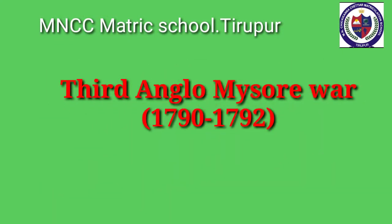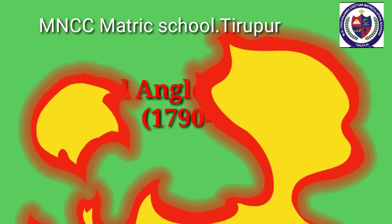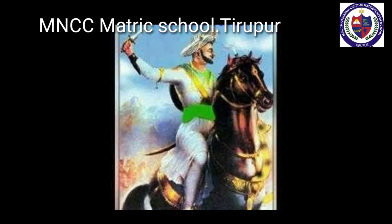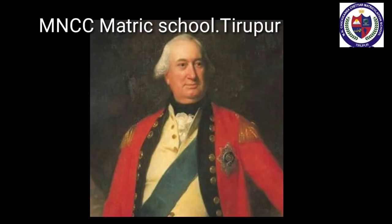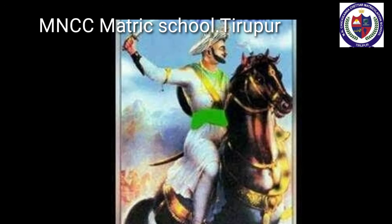Tipu was trying to seek alliance of foreign powers like France and Turkey. Tipu attacked Travancore in 1789, an ally of the British. The English, the Nizam, and the Marathas entered into a triple alliance against Mysore. Tipu fought alone for two years. The attack of the English under General Meadows failed. Therefore, in December 1790, Cornwallis himself took command of the army. Tipu felt desperate and opened negotiations with the English. Cornwallis agreed and the Treaty of Srirangapatnam was concluded in 1792.